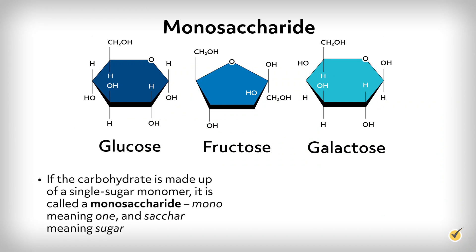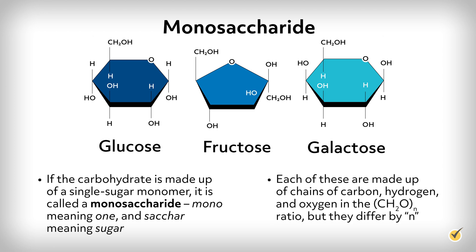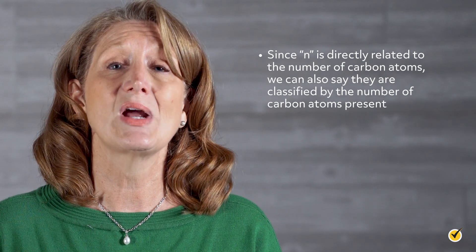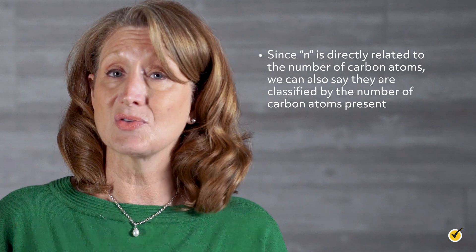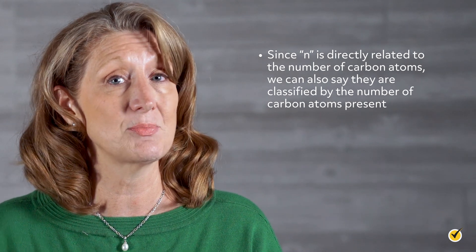One way we can classify carbohydrates is by the number of monomers they contain. If the carbohydrate is made up of a single sugar monomer, it is called a monosaccharide — mono meaning one and sacchar meaning sugar. Each of these are made up of chains of carbon, hydrogen, and oxygen in the CH2O N ratio, but they differ by N. Since N is directly related to the number of carbon atoms, we can also say they are classified by the number of carbon atoms present.